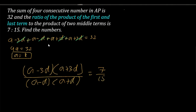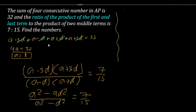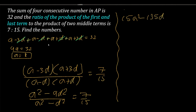Applying the identity (a+b)(a-b) = a²-b², the numerator becomes a² - 9d² and the denominator becomes a² - d², giving (a² - 9d²)/(a² - d²) = 7/15. By cross multiplication: 15(a² - 9d²) = 7(a² - d²), which gives 15a² - 135d² = 7a² - 7d².